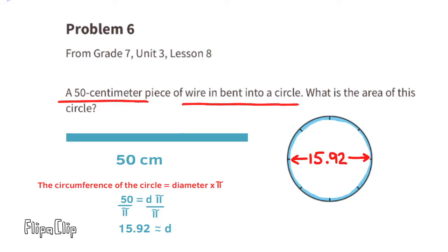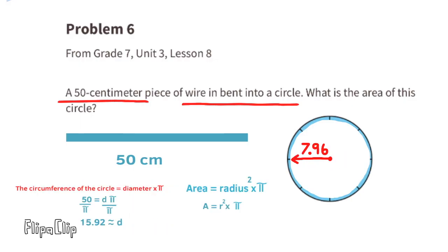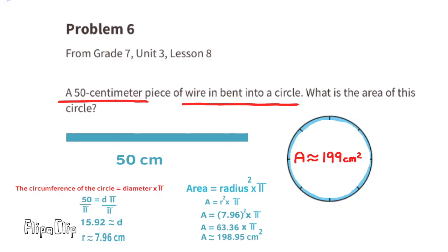Half of 15.29 centimeters is approximately 7.96 centimeters — that's the radius. The formula for the area of a circle is radius squared times pi, so 7.96 times 7.96 times pi equals approximately 199 square centimeters. The area of this circle is approximately 199 centimeters squared.